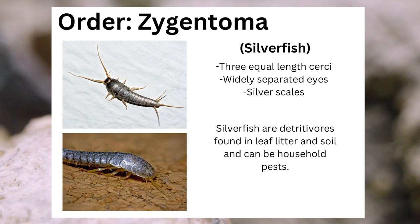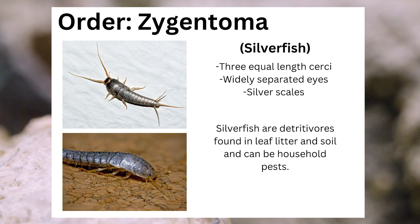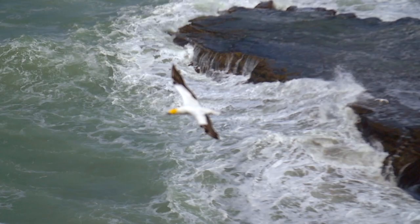The order Zygentoma, also called silverfish, can be identified through their three equal-length cerci, their widely separated eyes, and their namesake silver scales. Silverfish are obligate detritivores found in leaf litter and soil and can be household pests.